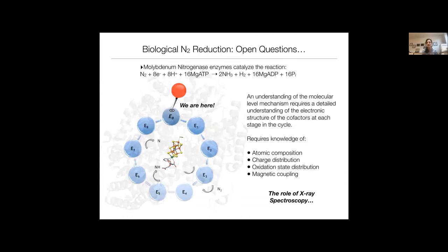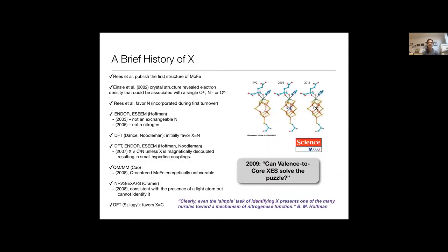So ultimately, I told you that we need eight electrons and eight protons to produce two molecules of ammonia. We're going to get back to that later, because for those of you who are paying attention, you probably already noticed there's extra electrons and protons there. And those extra electrons and protons are actually thought to be part of the mechanism. Part of the mechanism is the obligate release of H2, and we'll get back to that later. But what we'd like to know in principle is that every step from the ground state, which we call E0, to each addition of electron and proton, how is this active site transformed? What is the atomic composition at every state? What's the charge distribution, the oxidation state distribution, and the magnetic coupling?